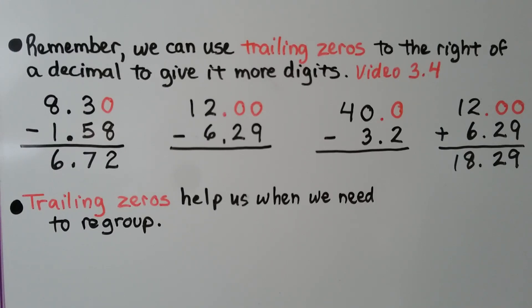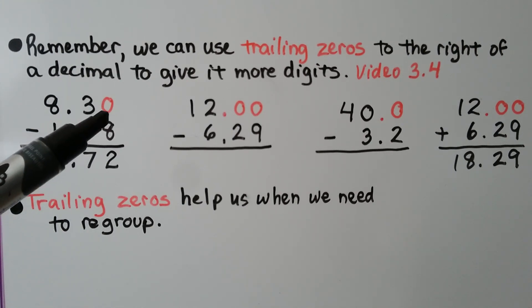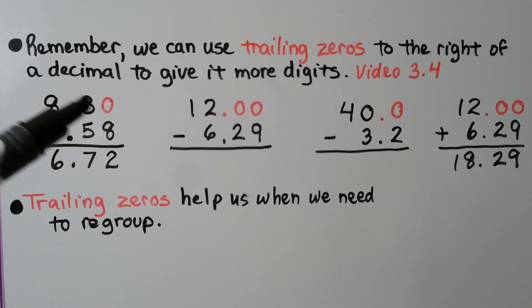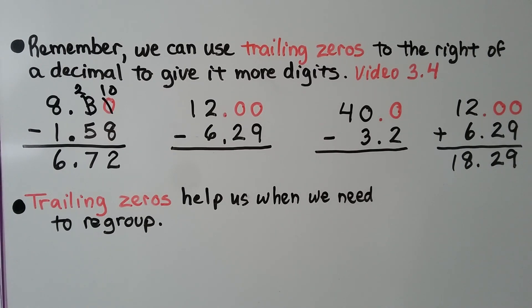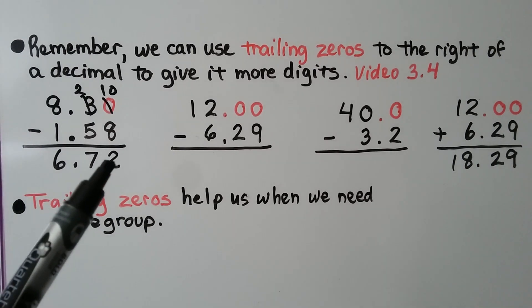And remember, we can use trailing zeros to the right of a decimal to give it more digits. If we have 8.3 and we need to subtract 1.58, we can put a trailing 0 here so that we can regroup from the next place value. We have 0 minus 8. We can't do that, so we regroup from the 3. It becomes a 2. The 0 becomes a 10, and 10 take away 8 is 2.